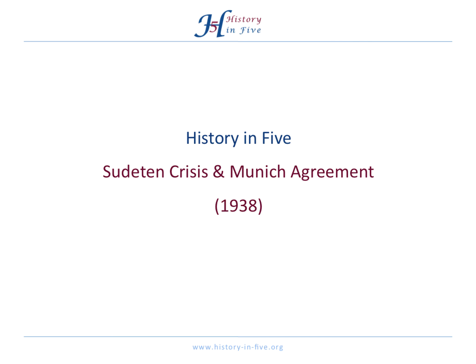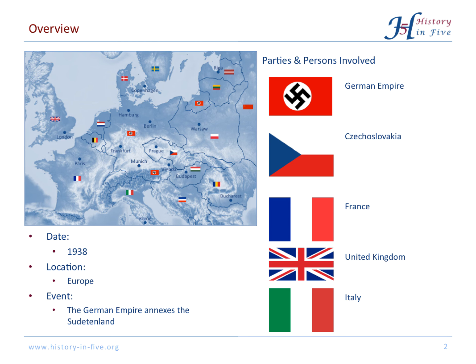This video is about the Sudeten crisis which led to the Munich Agreement. These events happened in the year 1938. In the end, the German Empire annexed the Sudetenland. There was a conflict between Germany and Czechoslovakia, but at the Munich Conference there were also France, the United Kingdom, and Italy.